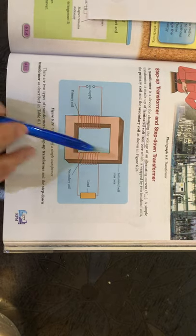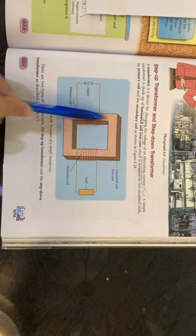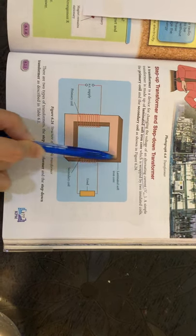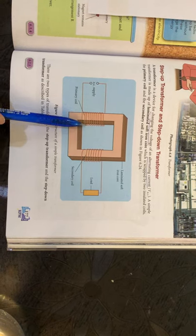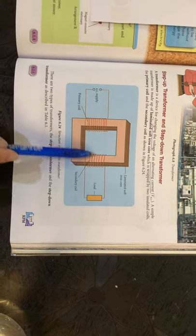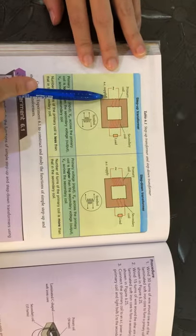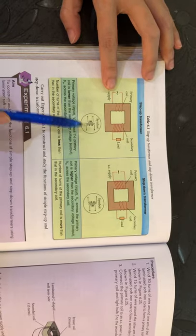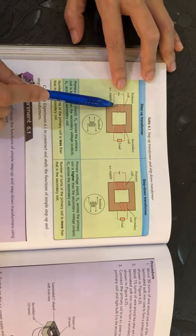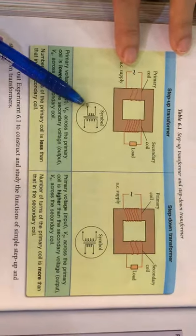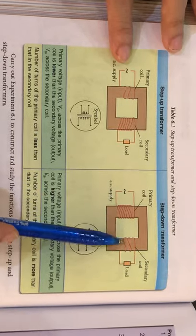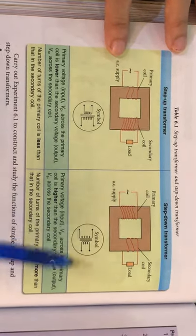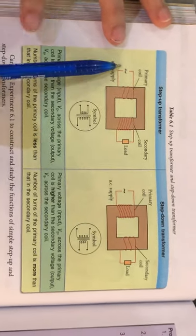So this is what a transformer looks like. The first coil here we call the primary coil, and the second coil we call the secondary coil. To determine whether it is step-up or step-down, you look at the number of turns. If the primary coil has more turns and the secondary has less, that is a step-down transformer. We have two types: step-up transformer and step-down transformer. Looking at the drawing and symbol — primary coil less turns, secondary coil more turns: step-up transformer. Primary coil more turns, secondary coil less turns: step-down transformer.